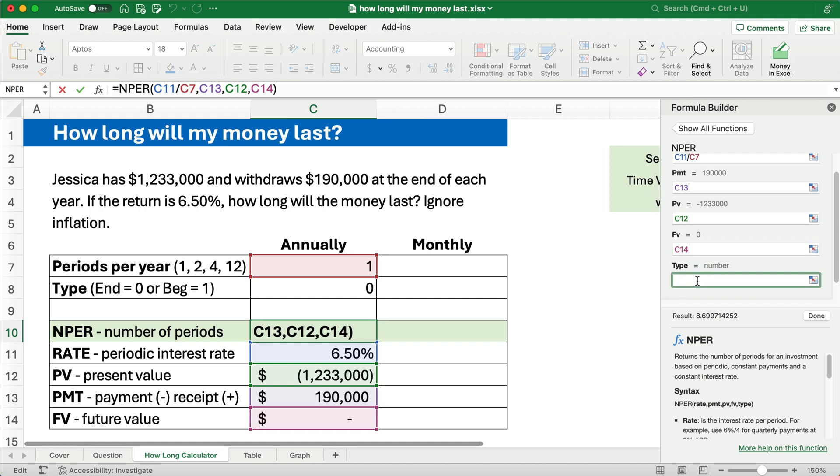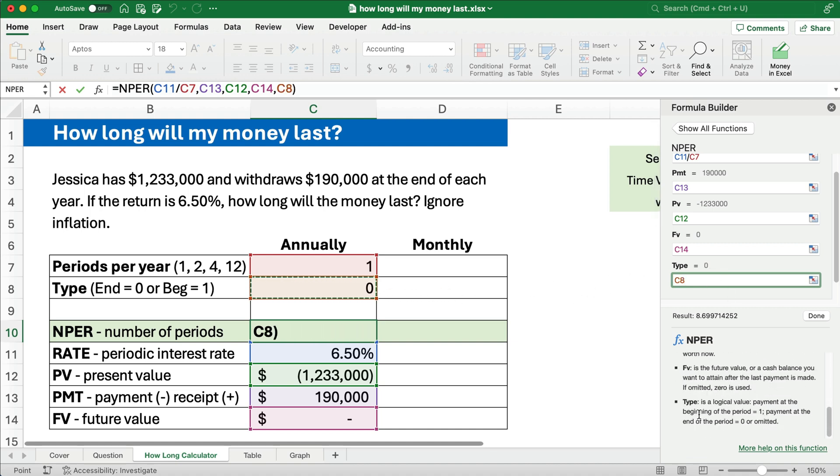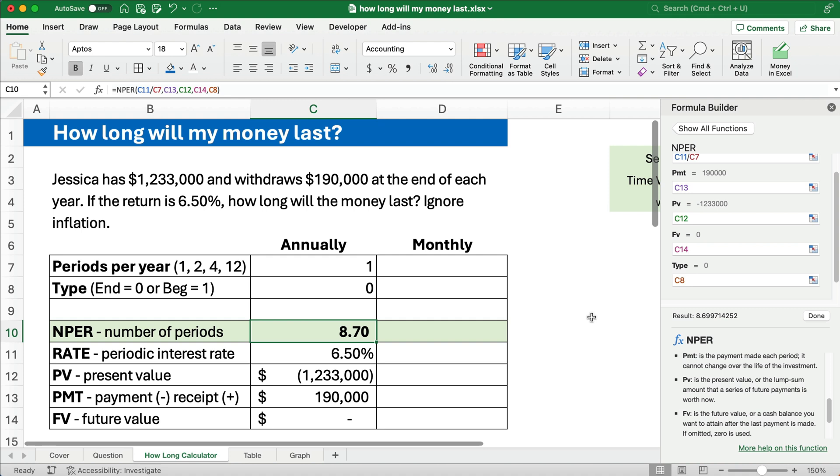And does the payment happen at the beginning of the year, January 1st, or at the end of the year, December 31st? We're going to assume payments happen at the end of the year. So here we're going to hit done. So it's going to take 8.7 years. You've got eight full years and then a partial year. 0.7 is a partial year. So during the ninth year, we'd run out of money. So we wouldn't have a full payment of $190,000. It'd be a partial payment less than $190,000.